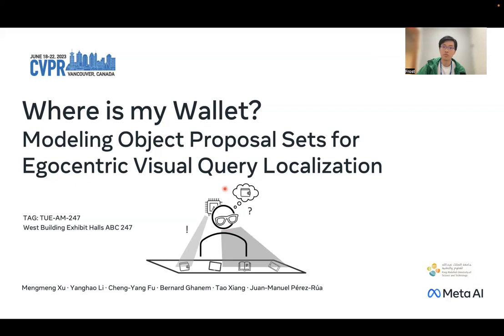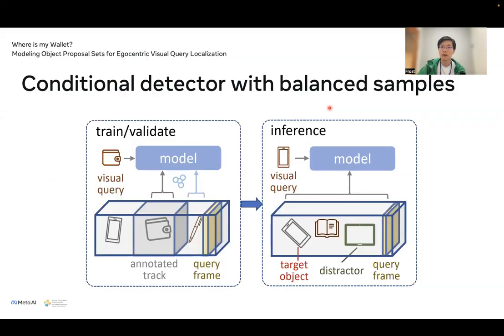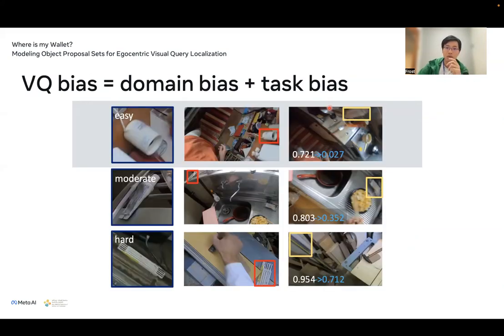In this work, we study the current baselines and provide a more efficient and effective solution. Our main idea is to design a conditional detector, and we train this detector with a balanced sample. Then we can apply the more advanced conditional detectors on the visual query task.